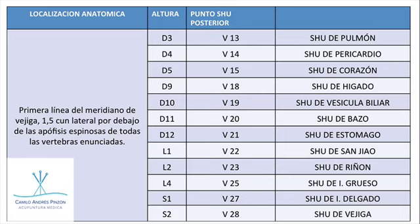La tabla es para que ustedes la tengan. No les voy a repetir lo mismo que ahí está dicho. Es importantísimo porque ubicándolo rápidamente, ya sé cuál es el Shu de cada uno. Hay 12 Shu. Hay vértebras que van desde D3, D4, D5 hasta las lumbares L1, L2, L4, Sacro 1, Sacro 2. Hay espacios que no tienen punto Shu al lado. 1.5 cun hacia el lado encuentro el punto Shu de cada uno de estos órganos.